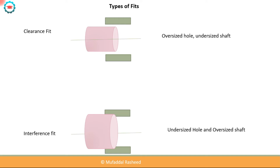One example is a bearing which is press fitted onto a shaft. The bearing has an interference fit with the shaft, and its function is to fasten the bearing onto the shaft. You can see that the functional requirements of interference fit may be different from that of a clearance fit.